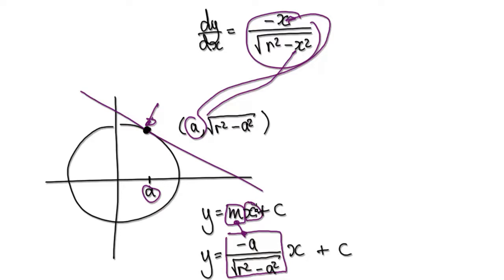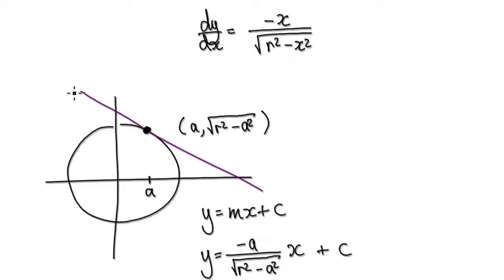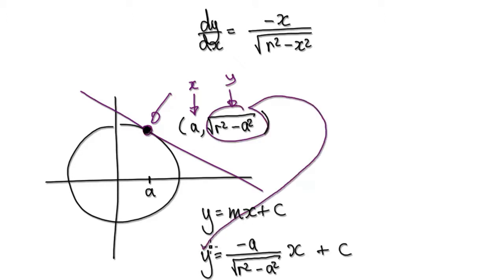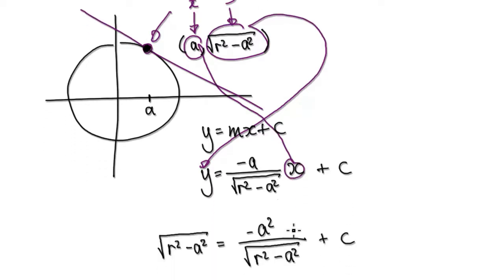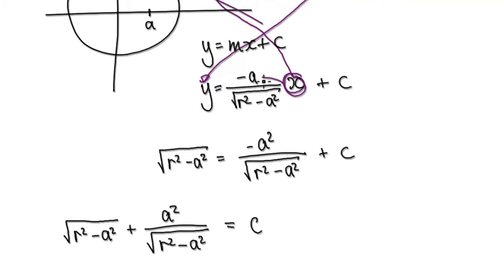Now we've got to work out the intercept. The intercept is right here, but we don't know where it is — we need to work it out. To work out the intercept, we know the gradient already. We need one particular point on that line. We know one particular point — it's right here, at coordinate a for the x-coordinate and square root of r squared minus a squared for the y-coordinate. So put this y-coordinate into y, and put a into the x.